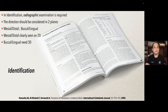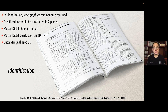How can we identify these dilacerations? We need to use radiographic examinations. When dividing dilacerations, they should be considered in two planes: we can have a mesial-distal curvature, or a buccal or lingual curvature. If mesial-distal, we can usually see it in a two-dimensional radiograph. But if the dilaceration is towards the buccal, lingual, or palatal, then we need 3D or CBCT to identify it.